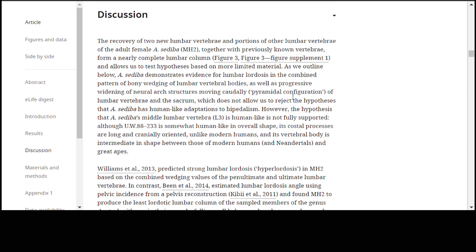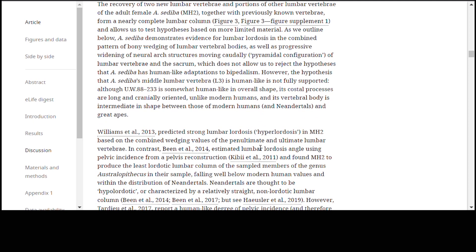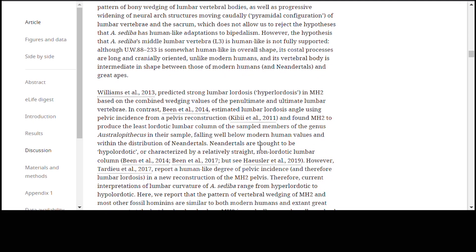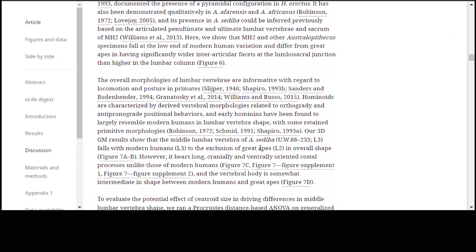However, the hypothesis that Australopithecus sediba's middle lumbar vertebrae is human-like is not fully supported. It's somewhat human-like in shape, but it has some features which kind of make it intermediate. So that's very interesting. It has this feature which gives it the full lumbar lordosis, but then on the other hand, it still has some things which align it with the great apes. They point out that they predicted a very strong lumbar lordosis based on the fossils that have been previously discovered.